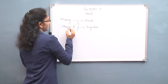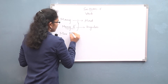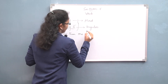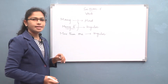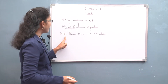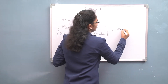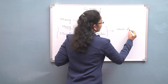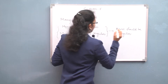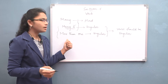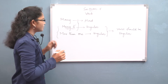One more thing: 'more than one' is also singular. So whenever you encounter 'many a' and 'more than one' in sentences, the verb should be singular. We are considering both of these as singular words — 'many a' is singular and 'more than one' is also singular. Let's see some examples.